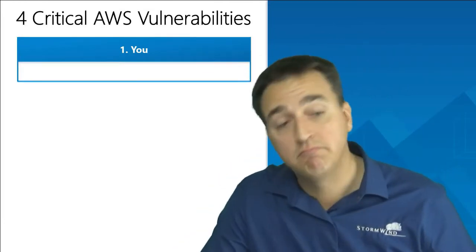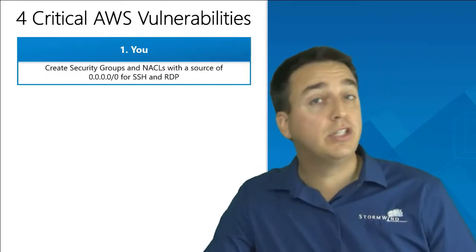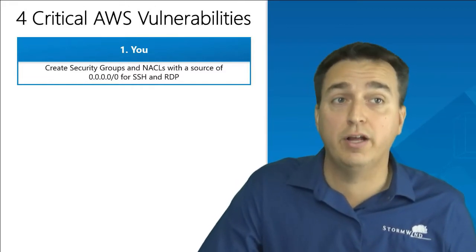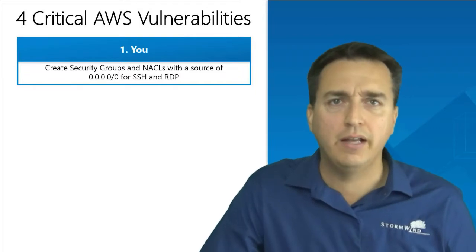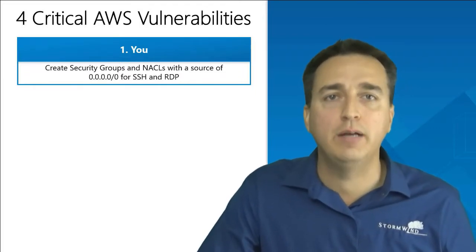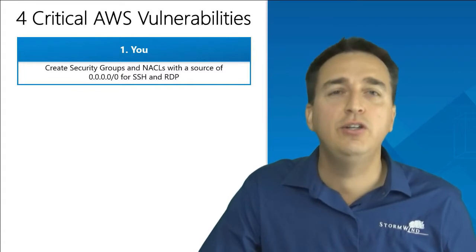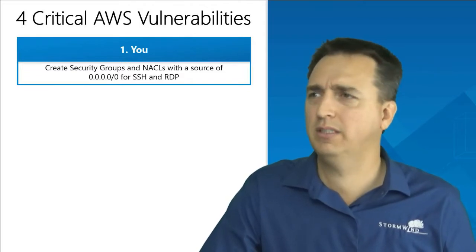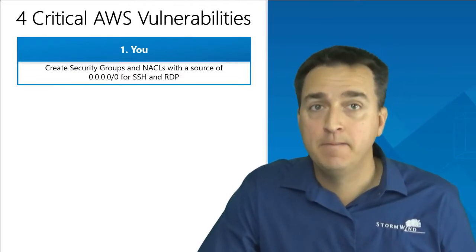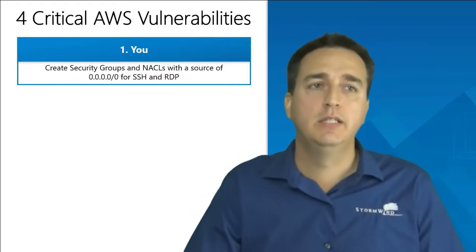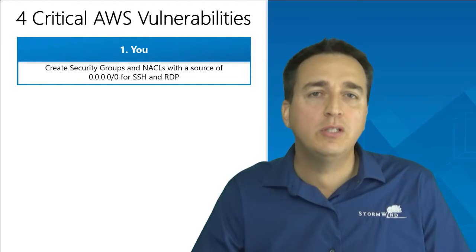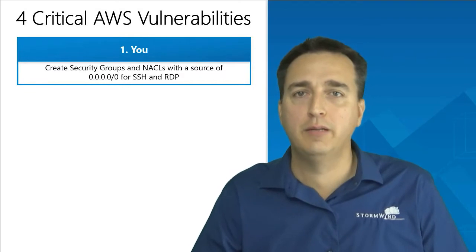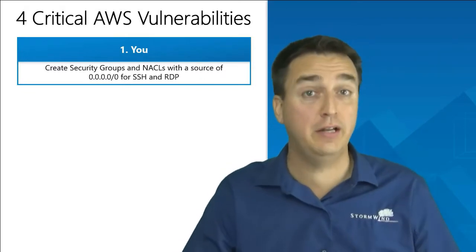I see you implementing security groups and network access control lists with a source of 0.0.0.0/0 for management access. You are allowing anybody in the entire world the ability to connect via SSH and RDP to your devices in the AWS environment. Most of us do have another option. Are we going to eliminate the vulnerability completely? No, but we can shrink the size of the vulnerability — I'm going to show you how to do that today.